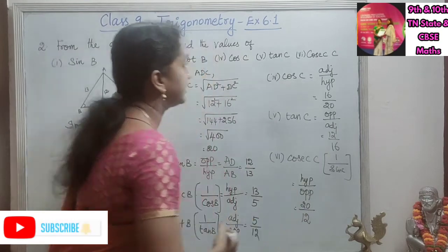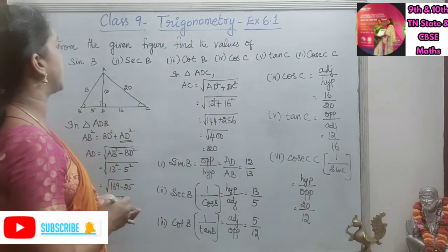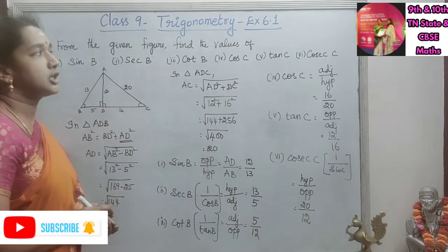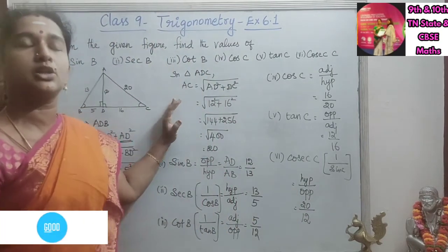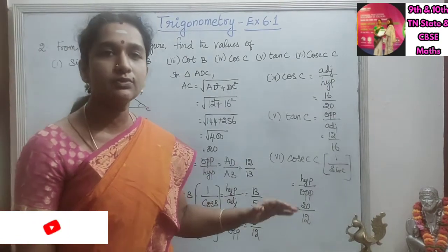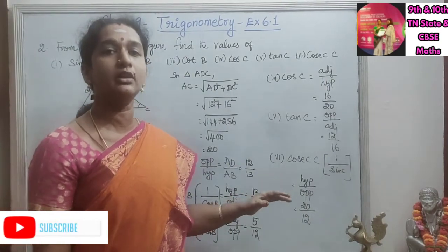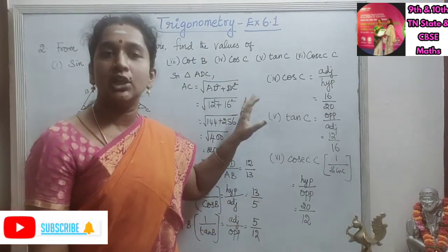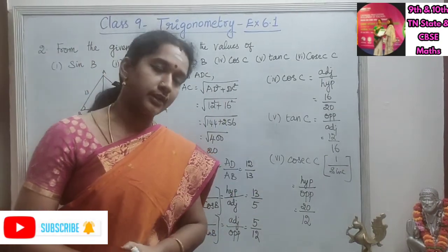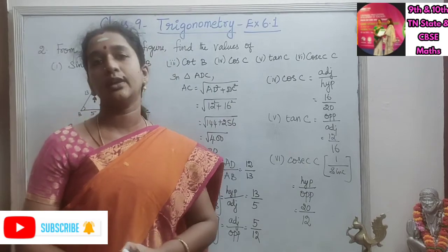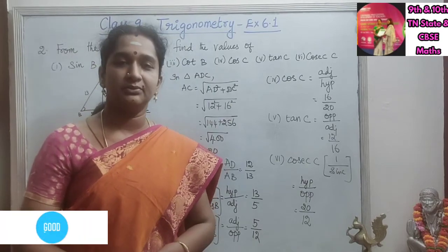So like this we need to find the trigonometric ratio. Whatever trigonometric ratios we are asked to find, we need to know all three sides of the triangle. Thank you.